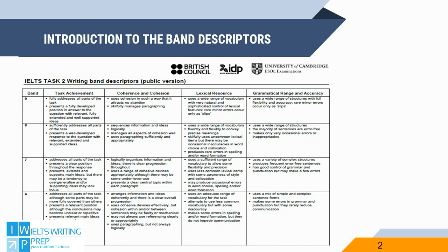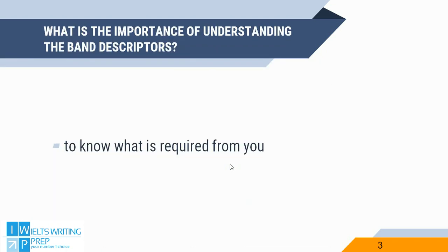On the left is the band mark and under each of the four descriptors is an explanation. The most important thing is that you know what the correctors want from you in order to give you your target band mark. Knowing the requirements will give you a clear goal to work on.